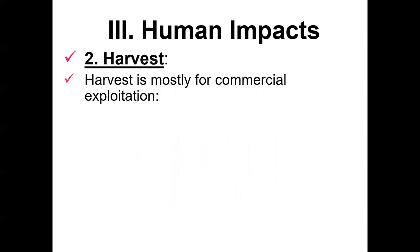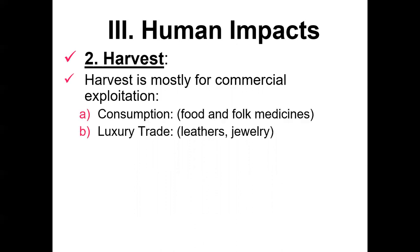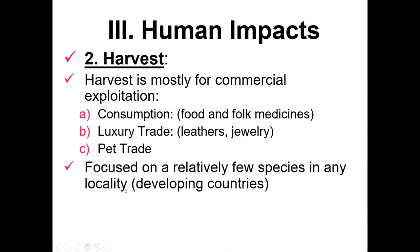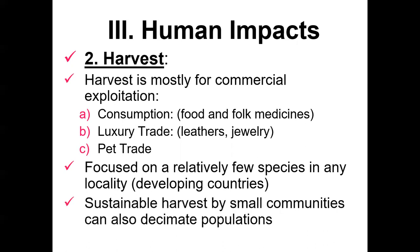What about harvesting? Harvesting for the illegal pet trade and unsustainable consumption are huge threats for wild populations of amphibians and reptiles, particularly in developing countries. Thinking about consumption, the luxury trade, and the pet trade — these are often focused on a relatively few species in any locality. Even sustainable harvest by small communities can decimate local populations.